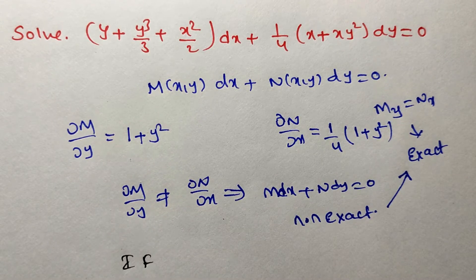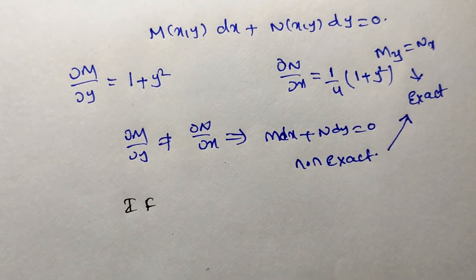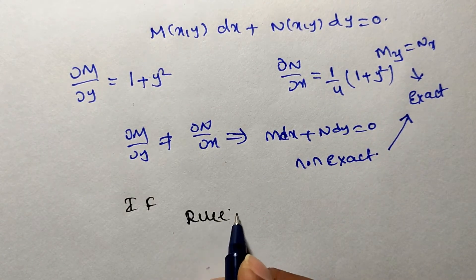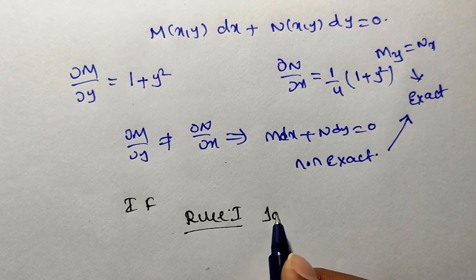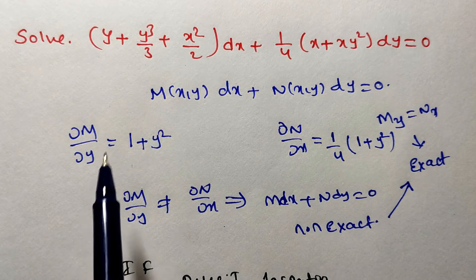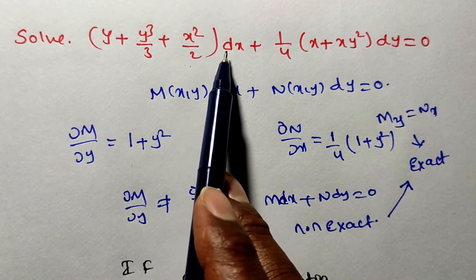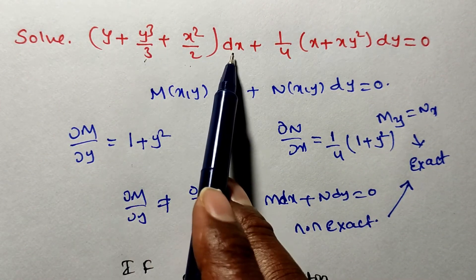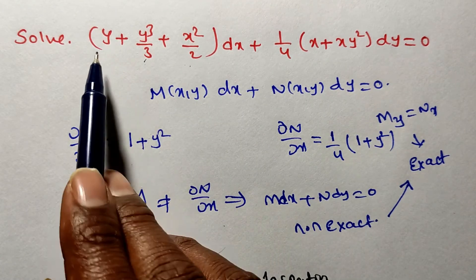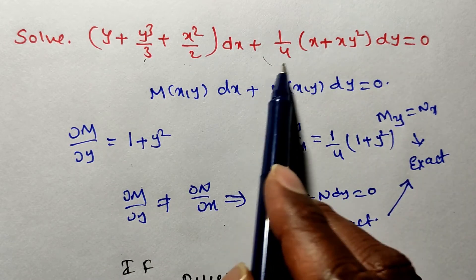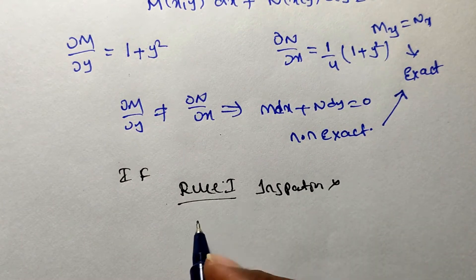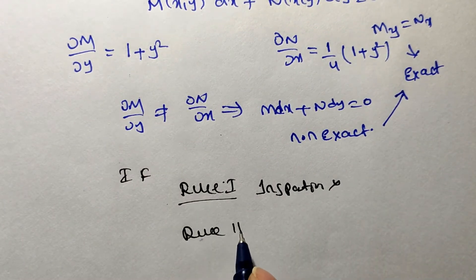We have different methods to find the integrating factor. Rule 1 or Method 1: the inspection method — you try to separate the variables. You can separate x²/2 dx, but y³/3 dx is not possible; y dx alone is not possible either. Inspection method cannot be applied here.